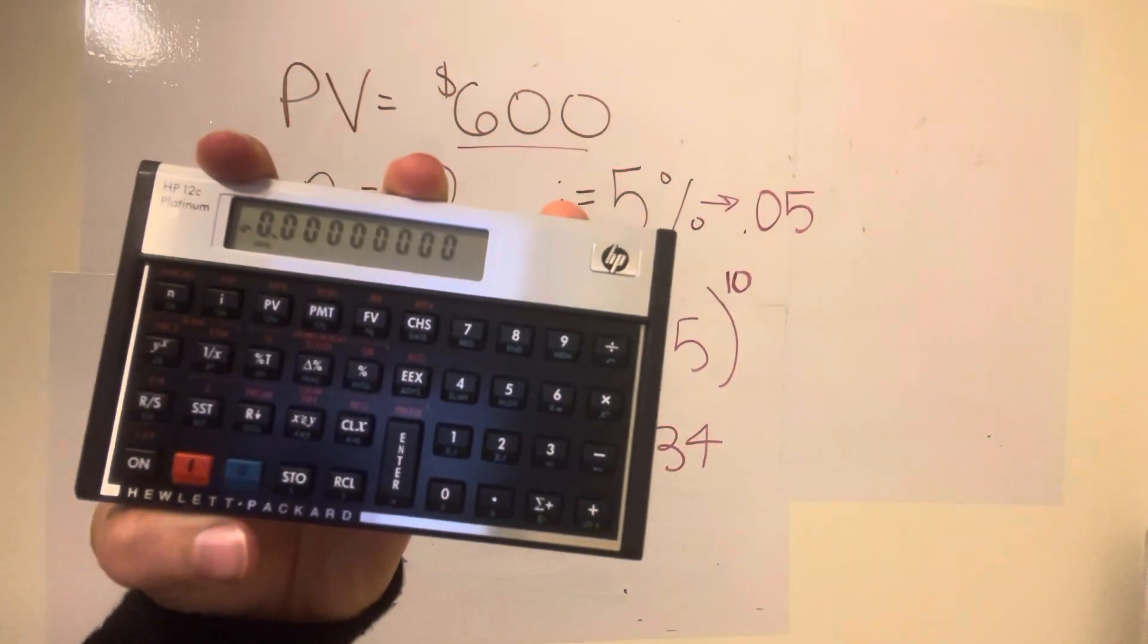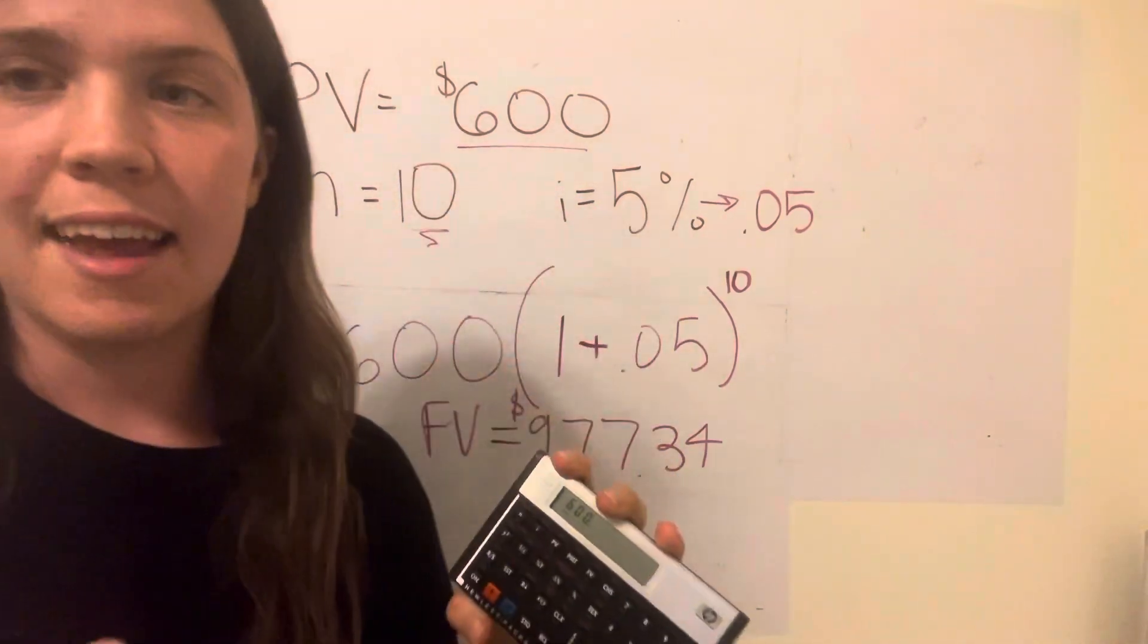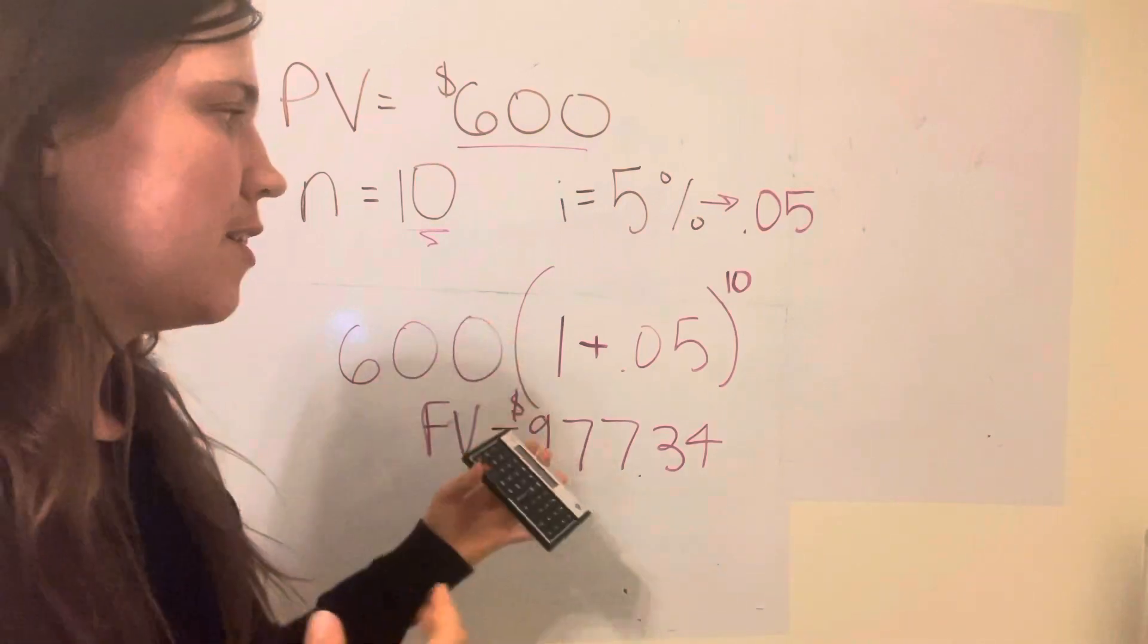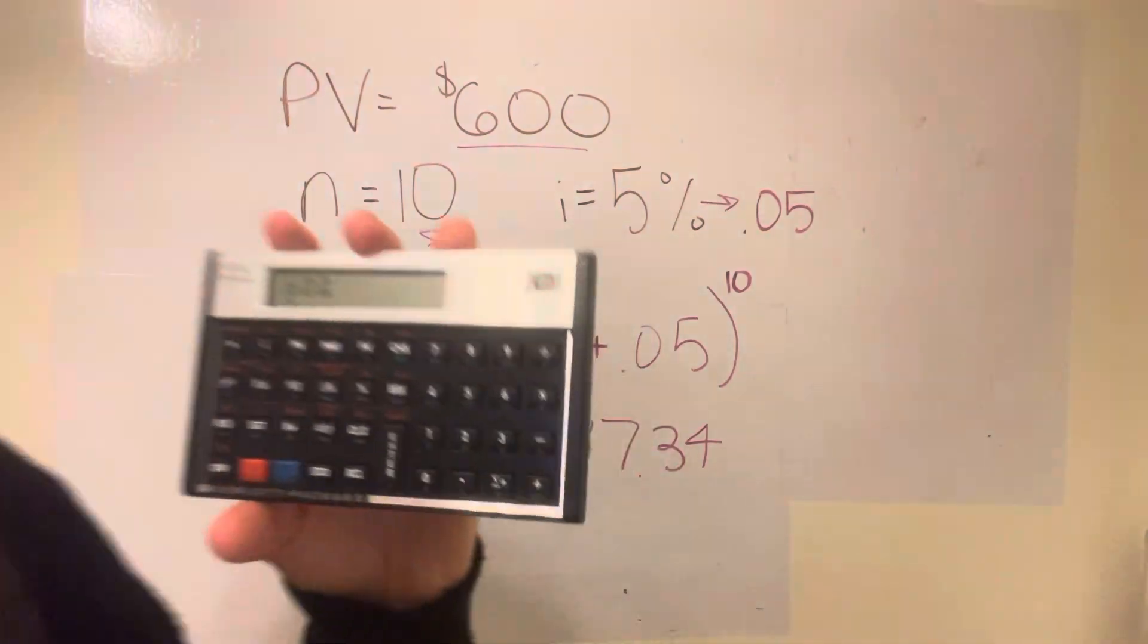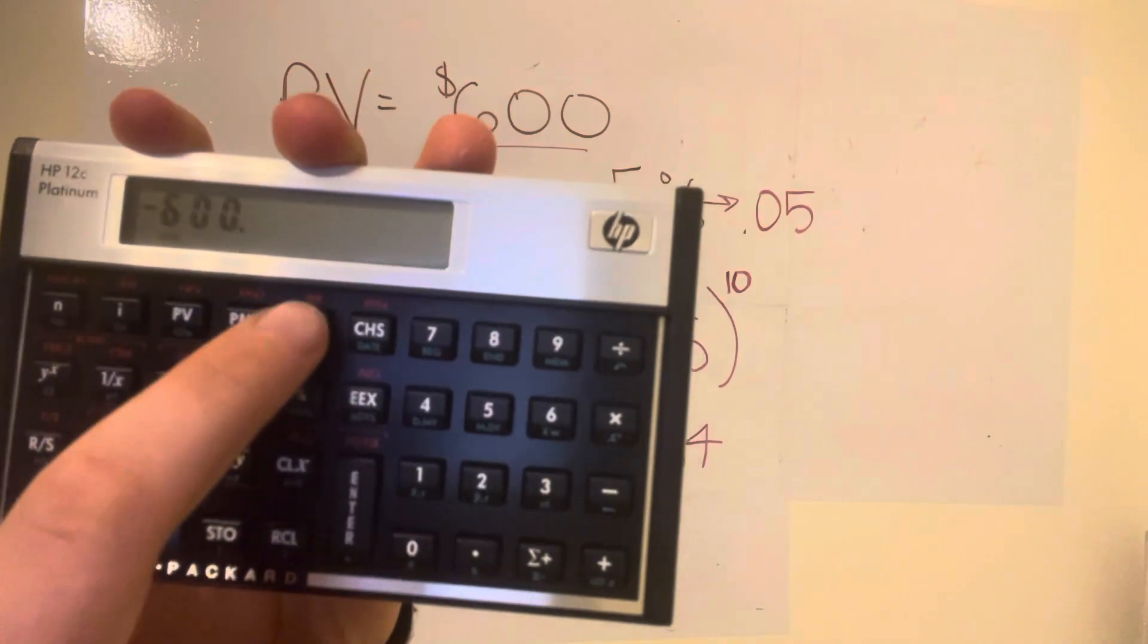For this, right now we're going to enter 600, and we're actually going to make it negative because we want our future value to be a positive value. So to do that, we're going to press CHS, then we're going to assign it to present value.